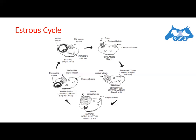During this stage the corpus luteum continues to develop and typically reaches its maximum growth and function by day 15 or 16. It secretes the hormone progesterone, which inhibits LH release by the pituitary gland. During this period the ovaries are relatively inactive except for the functional corpus luteum, so no follicles reach maturity or ovulate due to high concentrations of progesterone.